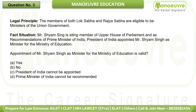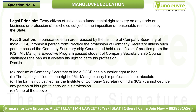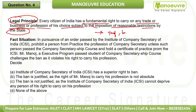Next question. Legal principle: Every citizen of India has a fundamental right to carry on any trade, business, or profession of his choice, subject to the imposition of reasonable restrictions by the State under Article 19 of the Constitution. Any exaggerated restriction would not be allowed — restrictions must be justified and reasonable.